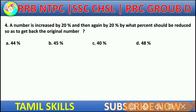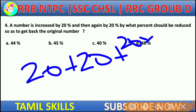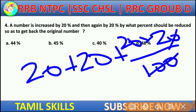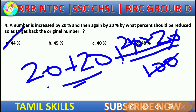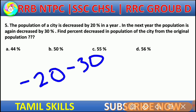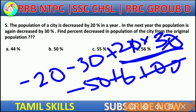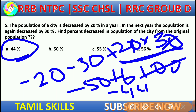Practice question: A number is increased by 20% and then again by 20%. Using the formula: plus 20, plus 20, plus (20 × 20) by 100. We get 40 plus 4 equals 44. So the net increase is 44%, and the answer is 44.